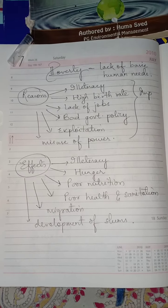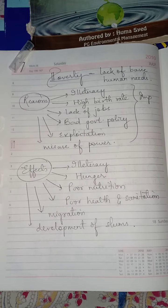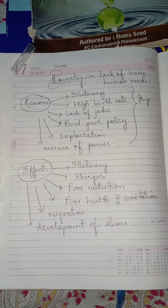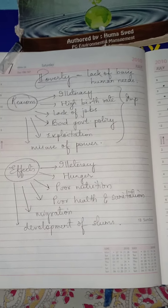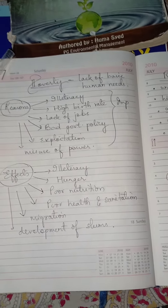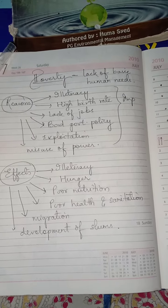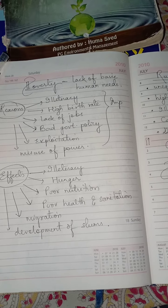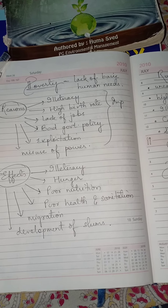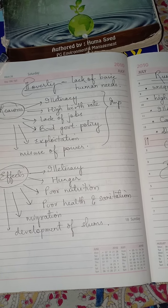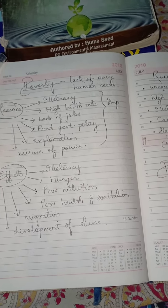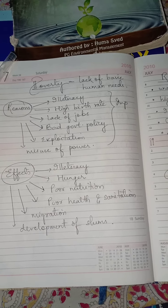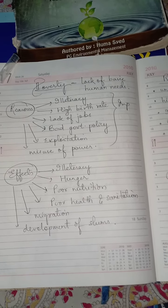In this section we will study regarding poverty. Poverty is nothing but lack of basic human needs, which includes clothing, education, health care, shelter, etc. The inability to afford all these kinds of assets will be considered as poverty.